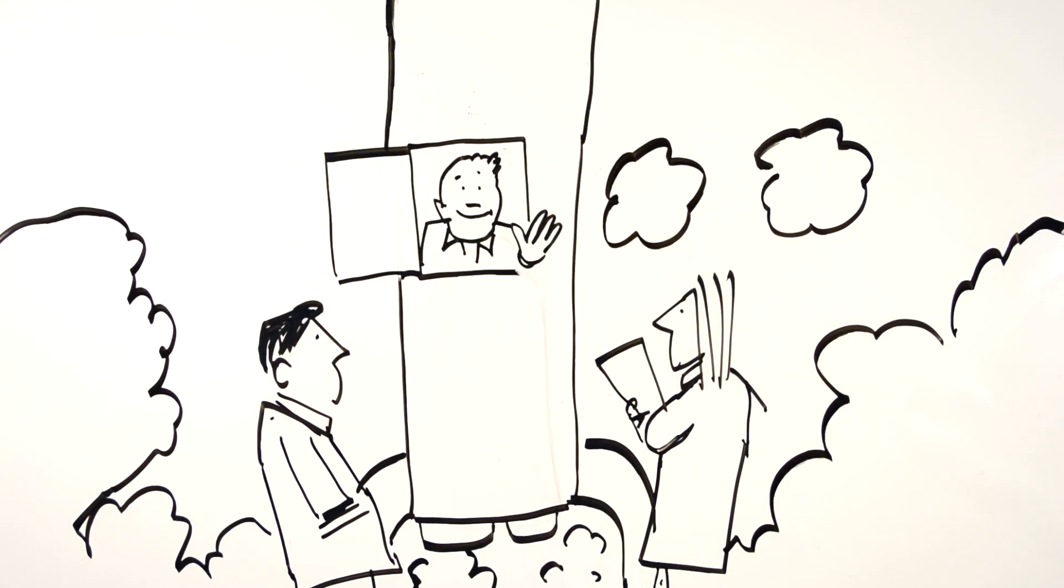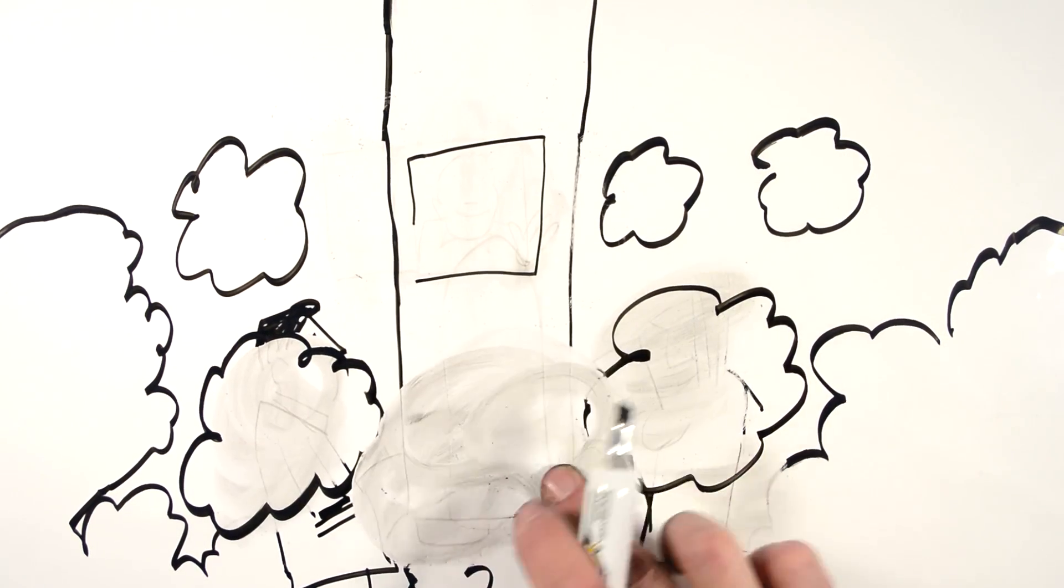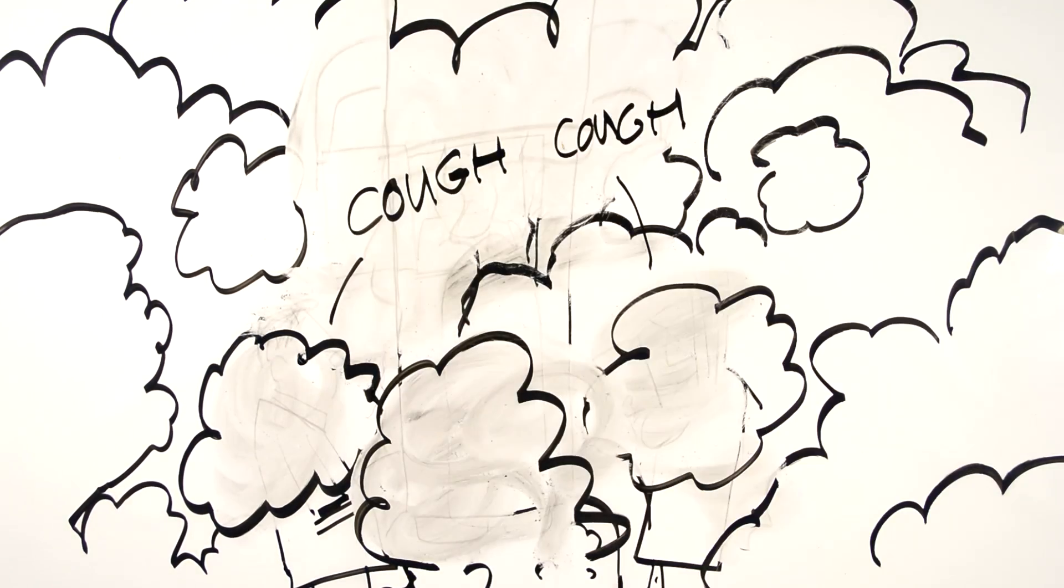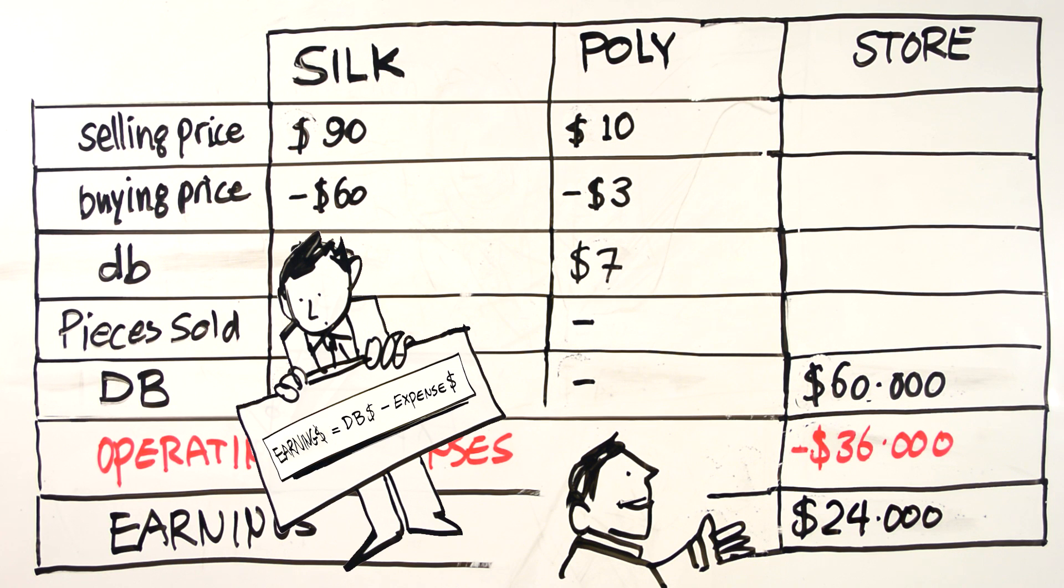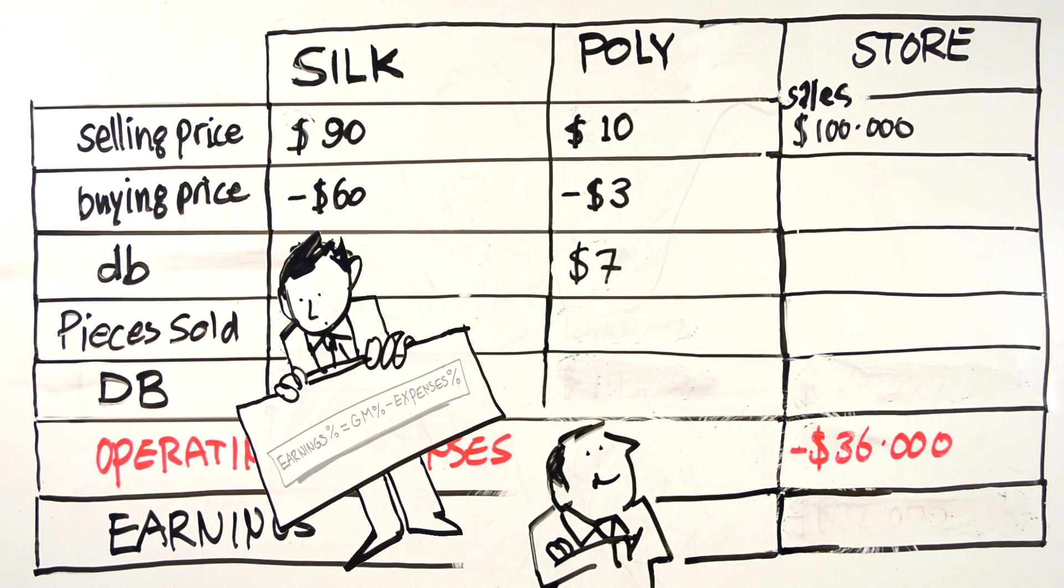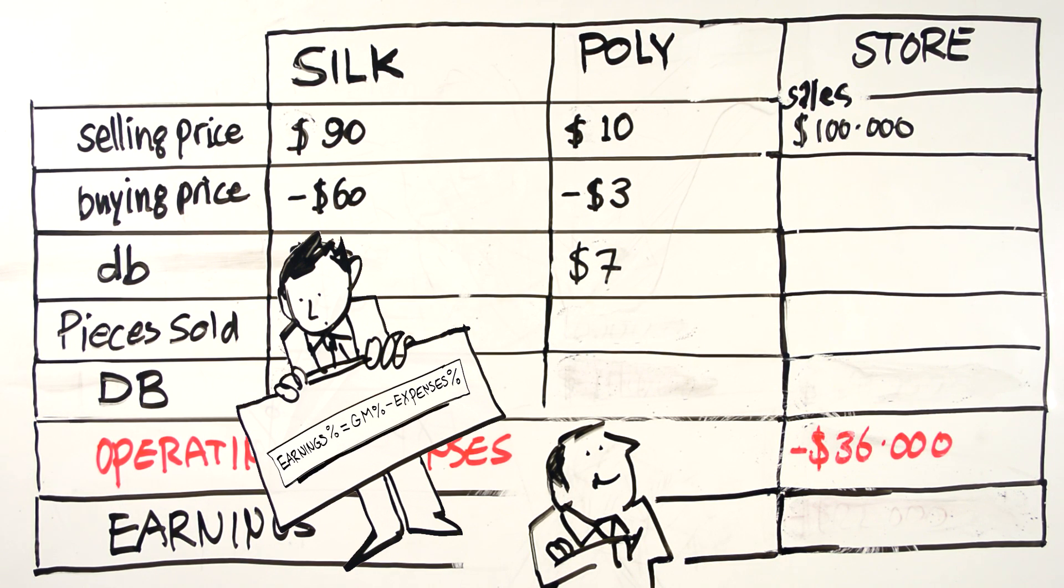This isn't rocket science, but adding in percentages can make profitable decisions seem crazy. Here's the dekkungsbeitrag framework: Earnings is dekkungsbeitrag minus expenses. Here's the percentage-based framework: Earnings is sales times margin percentage minus expenses percentage.